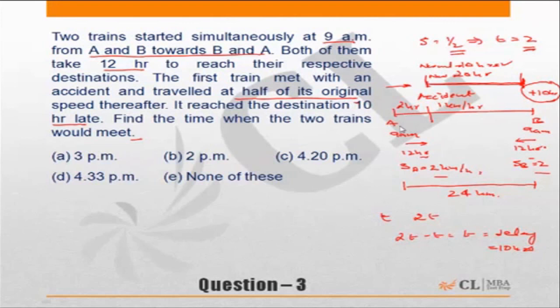So in the first 2 hours at the speed of 2 kilometers per hour, the train would have covered 4 kilometers. Similarly, the other train would have also covered 4 kilometers. So we can say out of the 24 kilometer distance of A and B, 4 plus 4 kilometers, 8 kilometers have been covered before the accident.